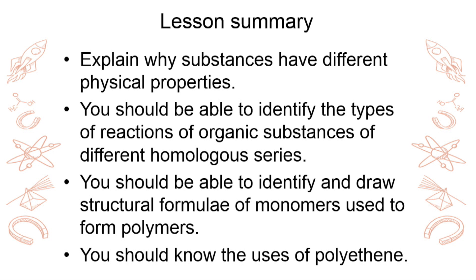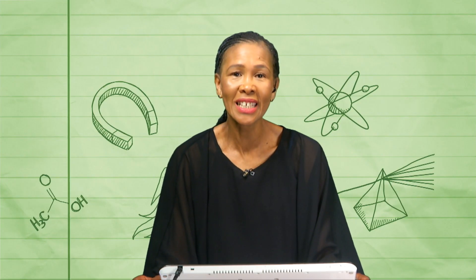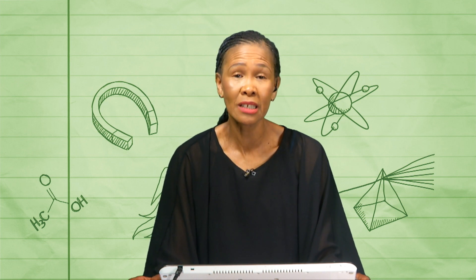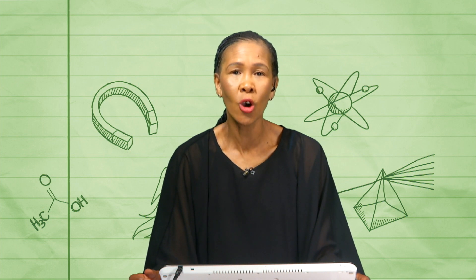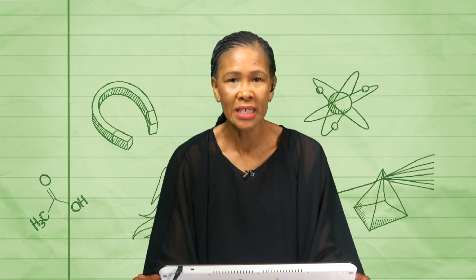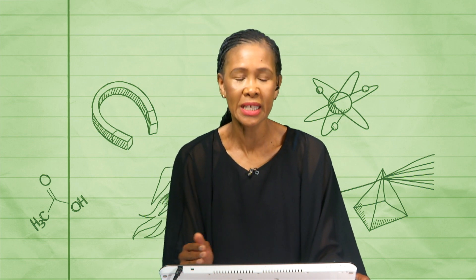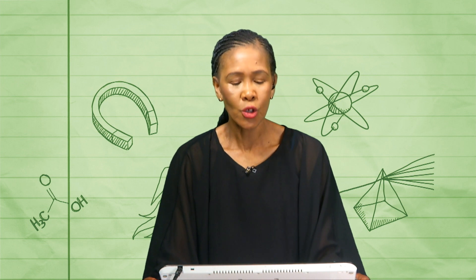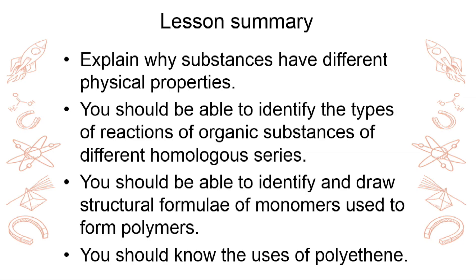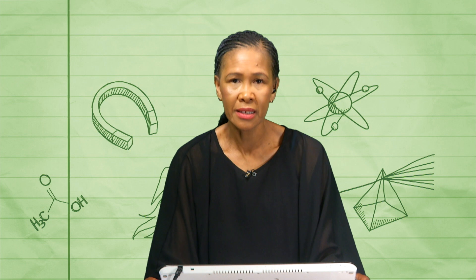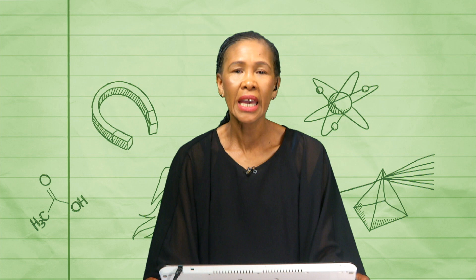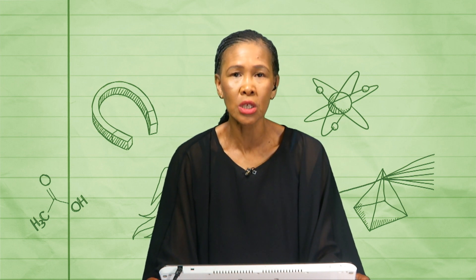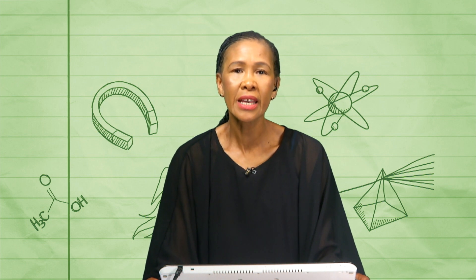We've got different types of reactions. Mainly, we talked about addition reaction, substitution reaction, as well as elimination reaction. When you are doing the opposite of addition, you are eliminating. With substitution, when you take out something, you bring something in. You should also be able to identify and draw structural formulae of monomers used to form polymers — especially polyethene and polyvinyl. Even polylactic acid. You need the PVC and polyethene especially.